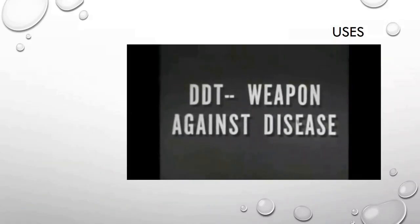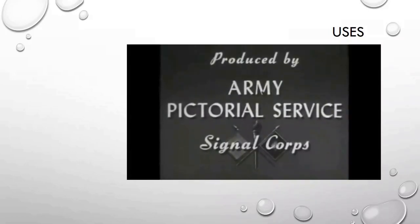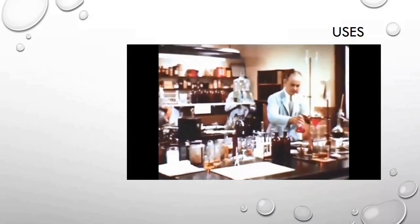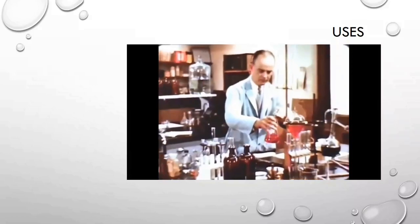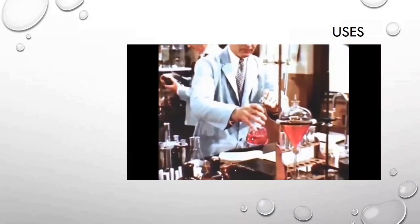In 1943, the first six pounds of DDT arrived in the United States. It was tested by various government agencies, and before the war was out, we were producing tons of it.